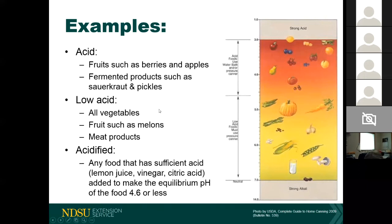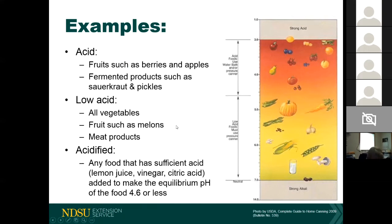Be aware that some fruits, like melons — cantaloupe, honeydew, watermelon — are not acidic; they fall into the low acid category. Don't assume all fruits are acid just because we classify them as fruit from a market perspective. Meat products also fall in the low acid environment. Acidified foods are those where sufficient acid — such as lemon juice, vinegar, or citric acid — is added to bring the equilibrium pH to 4.6 or less.